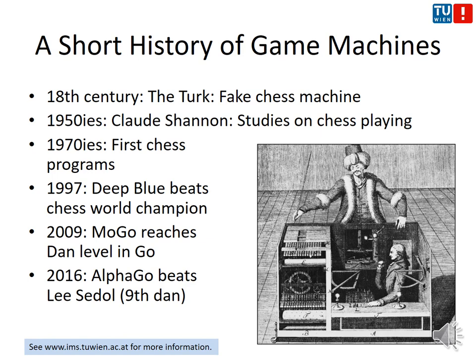Only in 2009 did the first Go algorithm — Go being a far more complex game — MoGo reach a dan level, meaning it achieved considerable results though could not beat the best players. Only in 2016, with significant effort from Google — in particular by acquiring two companies that had the lead in Monte Carlo tree simulation and deep learning respectively — was it possible to beat Lee Sedol, one of the best players in the world. Hardly anyone had expected a machine could beat a master so early.